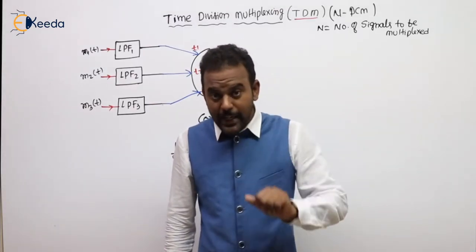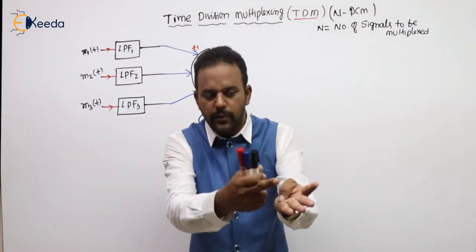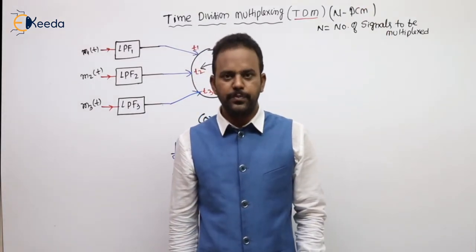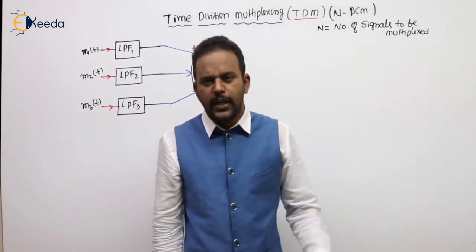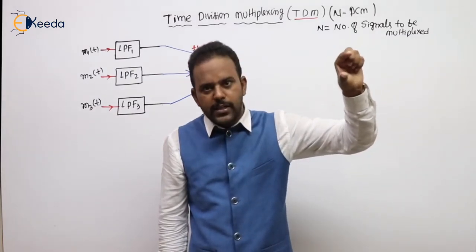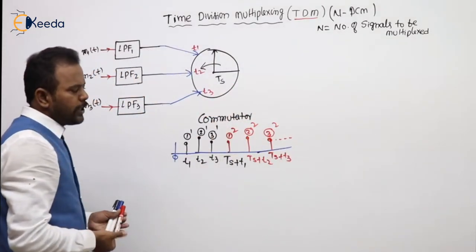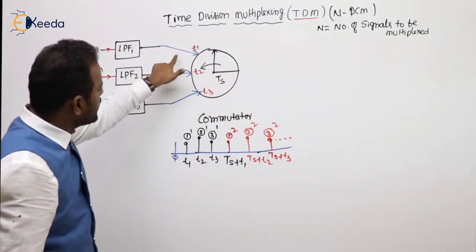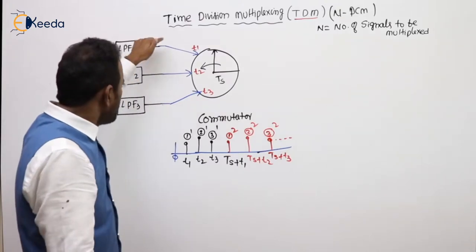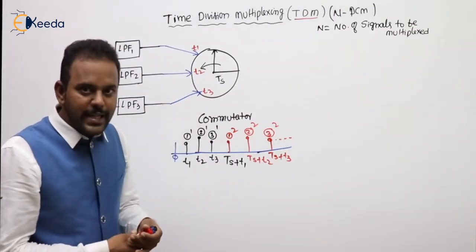At any instant of time, only one message is present. For each and every message there is a particular time slot: for the first message, T1, Ts+T1, 2Ts+T1, 3Ts+T1, NTs+T1 — dedicated to the first message. NTs+T2 for the second message, NTs+T3 for the third. The input of the commutator has many inputs and one output — many-to-one is nothing but a multiplexer, or it can also be called a parallel-to-serial data converter. TDM is also called a parallel-to-serial data converter.